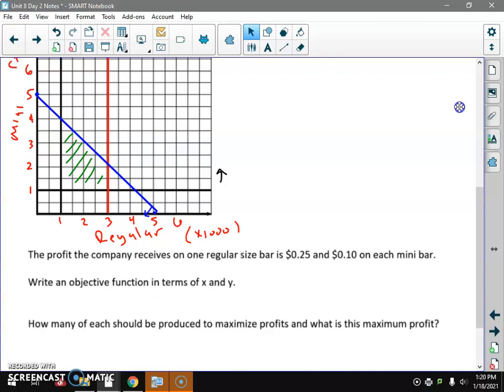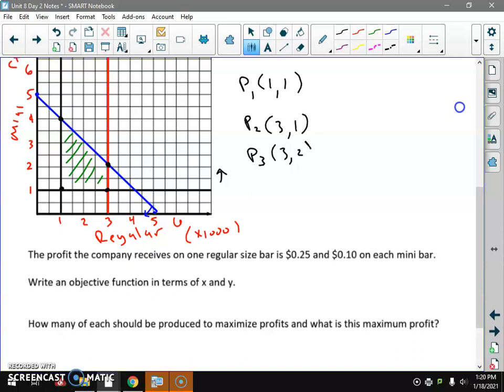I see four corners. Let's give them some names: P1 is 1,000, 1,000, P2 is 3,000, 1,000, P3 is 3,000, 2,000, and P4 is 1,000, 4,000.